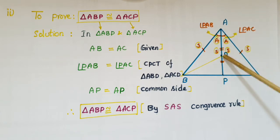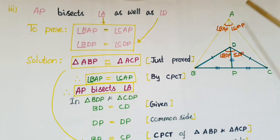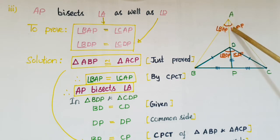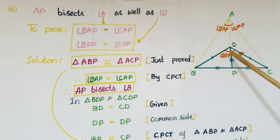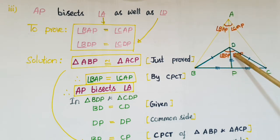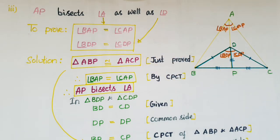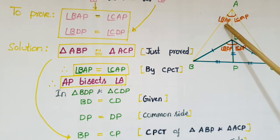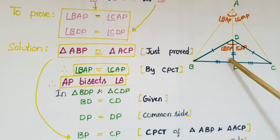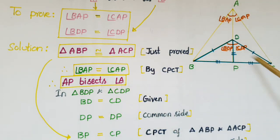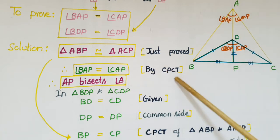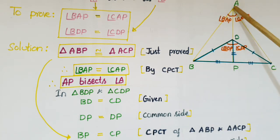Next, AP bisects angle A as well as angle D. To prove AP bisects angle A, we need to show angle BAP = angle CAP. Since we just proved triangle ABP is congruent to triangle ACP, the corresponding parts of these two triangles are equal. So angle BAP = angle CAP by CPCT, which means AP bisects angle A.